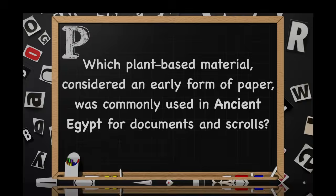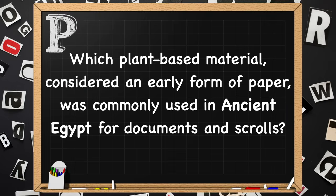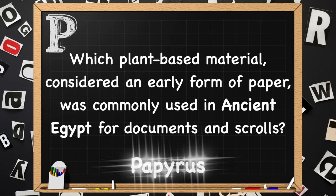Beginning with P. Which plant-based material, considered an early form of paper, was commonly used in ancient Egypt for documents and scrolls? The answer is papyrus.